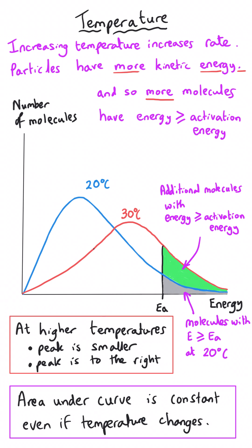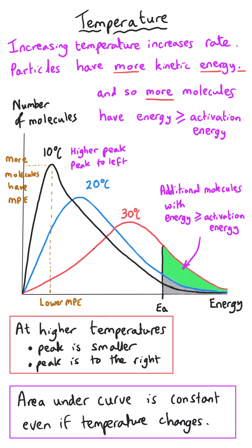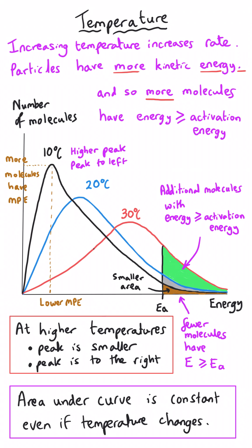Similarly, if we lower the temperature to, say, 10°C, on average the particles will have less energy, so the peak will shift to the left-hand side. Because the distribution is more bunched up, more molecules will have the most probable energy, so there will be a higher peak. Because the curve is squashed to the left and the line is lower after the activation energy, the area under the curve past the activation energy is less — fewer molecules have energy greater than or equal to the activation energy, so the rate of reaction goes down.